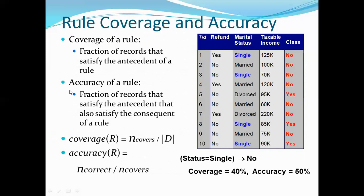Accuracy of a rule is the fraction of records that satisfy both the antecedent and the consequent. The learned model is tested on the test set and you find how accurate the prediction is — that is the accuracy of the rule.